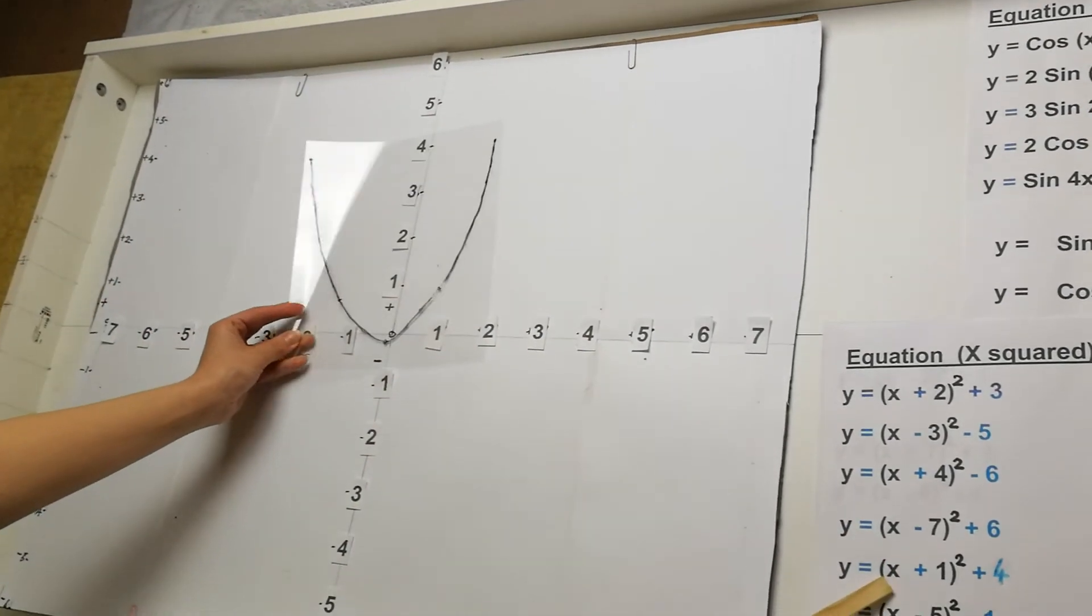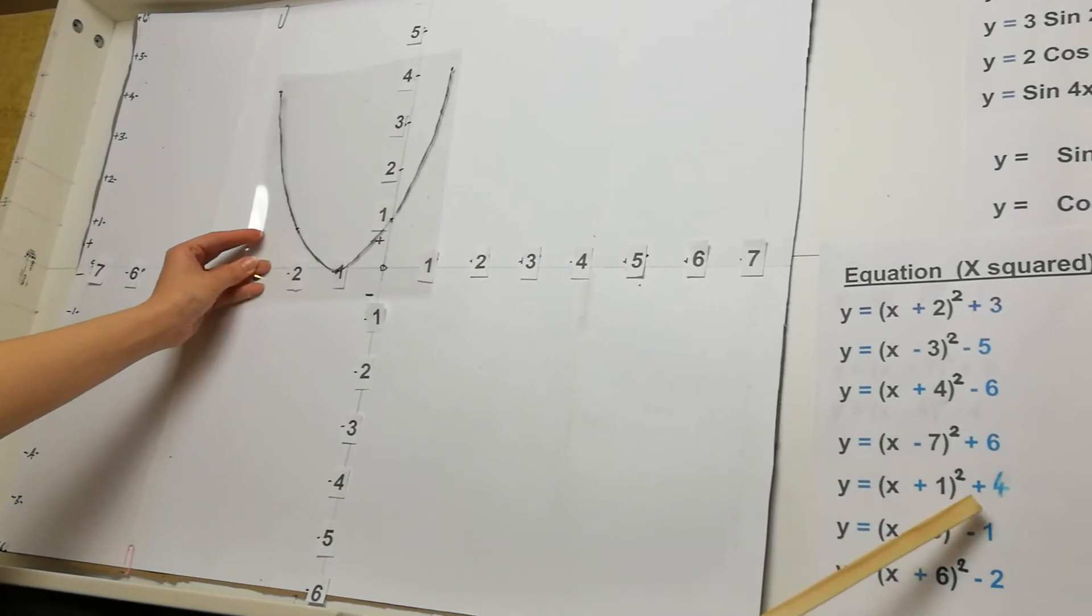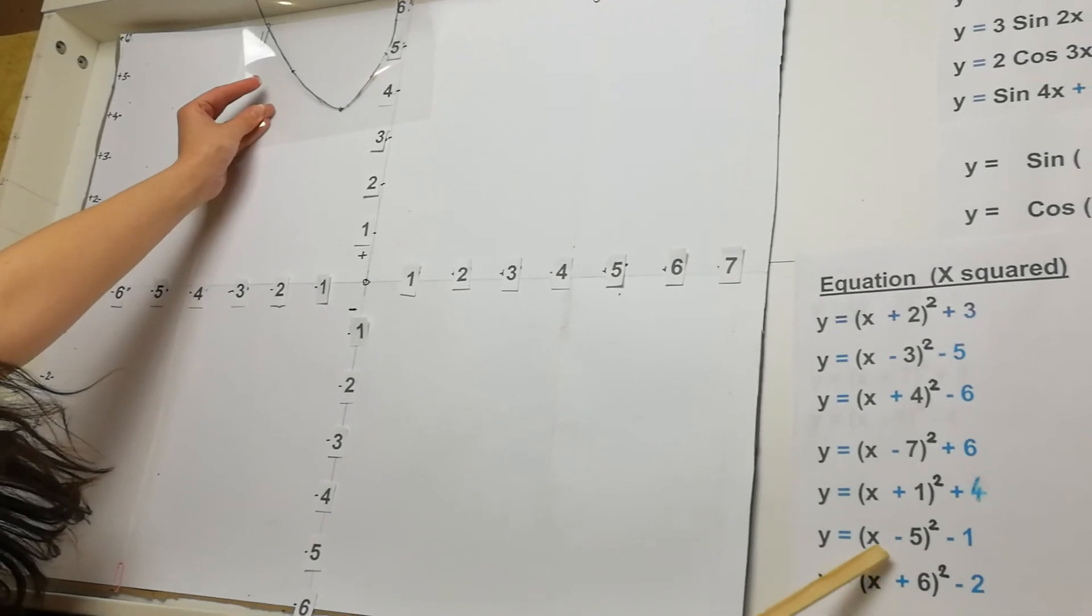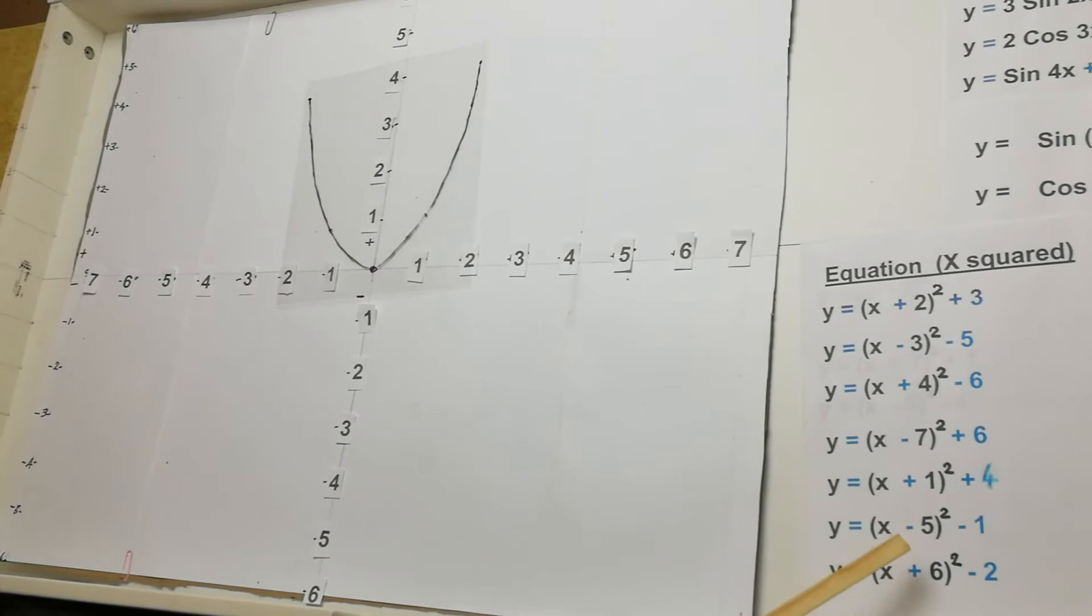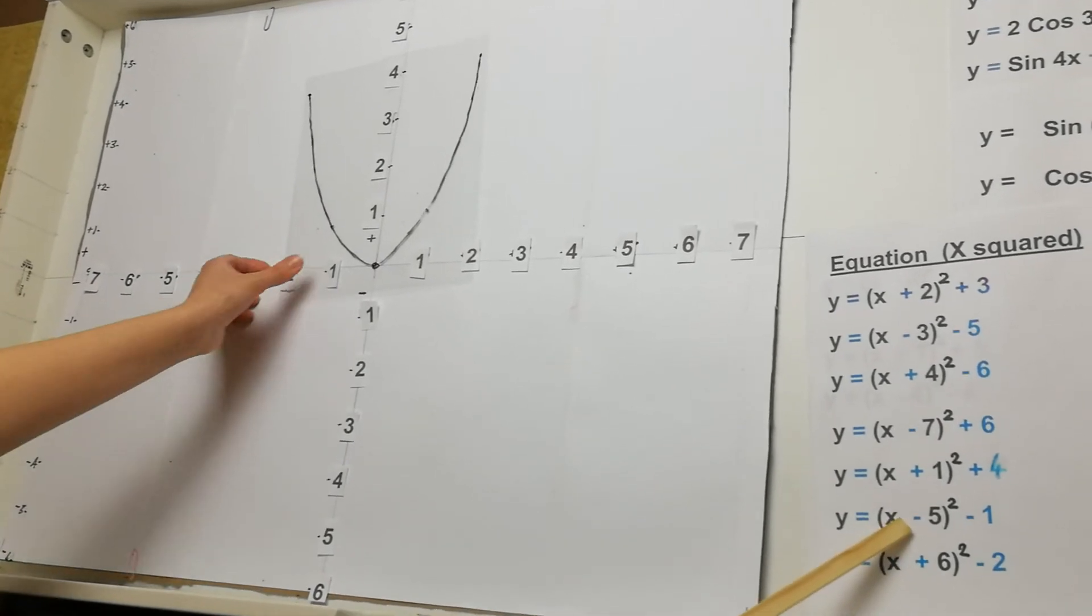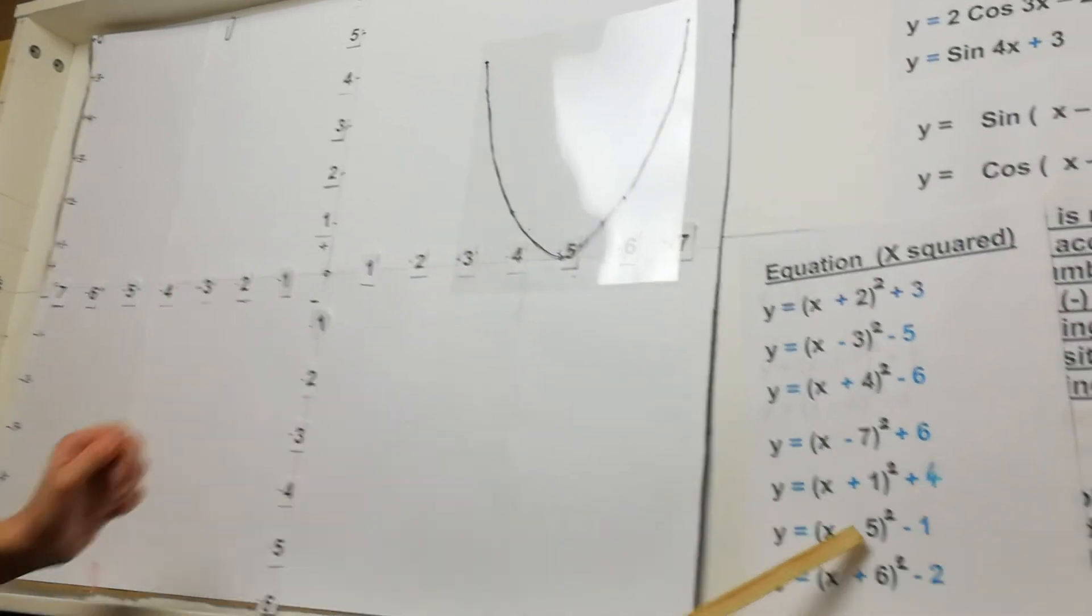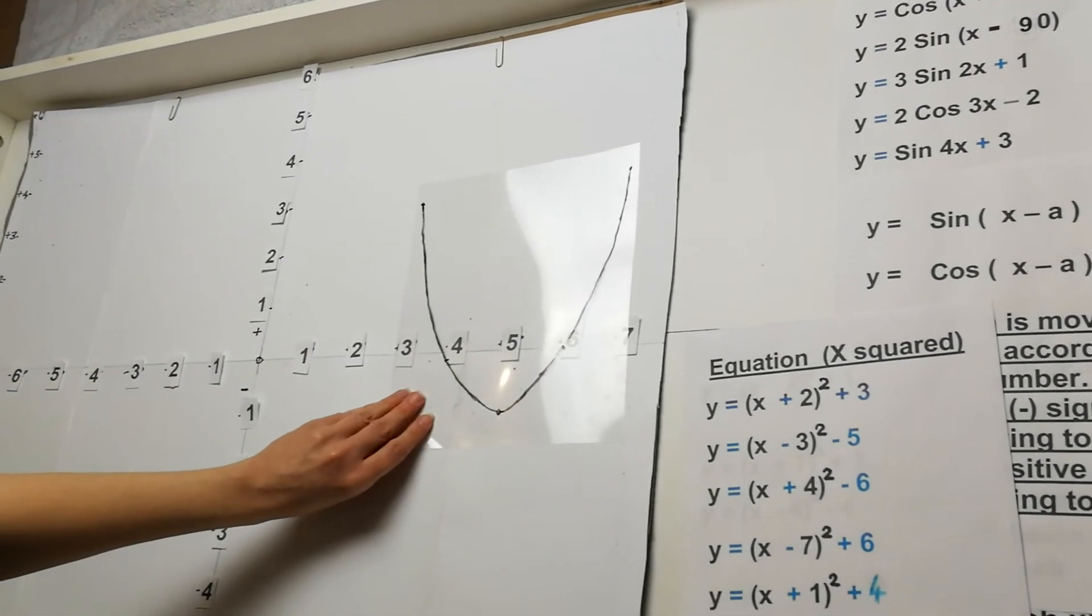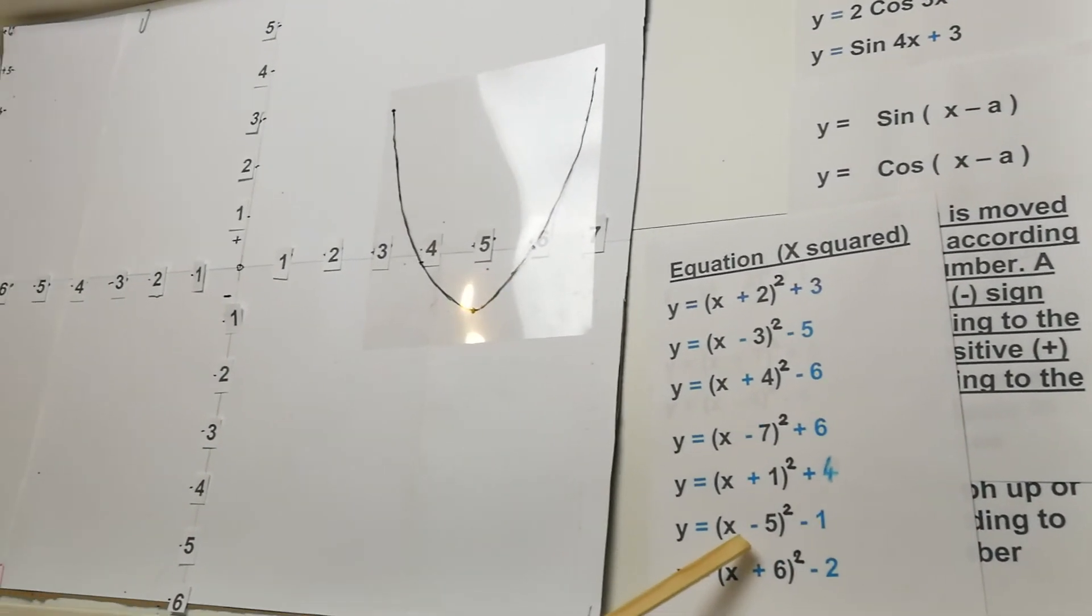This one here, plus 1 means moving to the left by 1, plus 4 means moving up by 4. This one, take away 5 in the bracket, move to the right by 5. Take away 1 means moving down by 1. So basically your turning point in that is 5, negative 1.